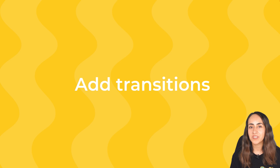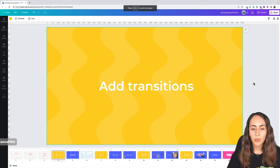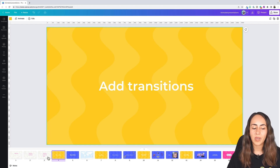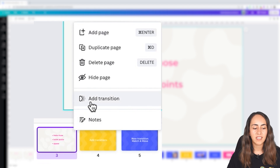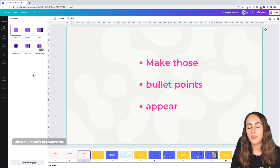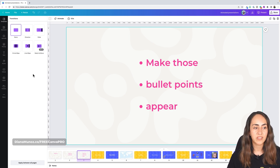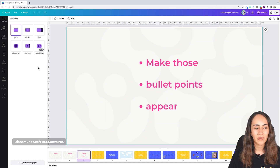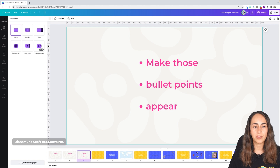The second tip is to add transitions to your presentations. Let's say I want to add a transition from page three to page four. I'll go to page three, click the three dots, and select Add Transition. Canva opens a window showing five different transitions — you can preview them by hovering over each one: Dissolve, Slide, Circle Wipe, Line Wipe, and Match and Move.